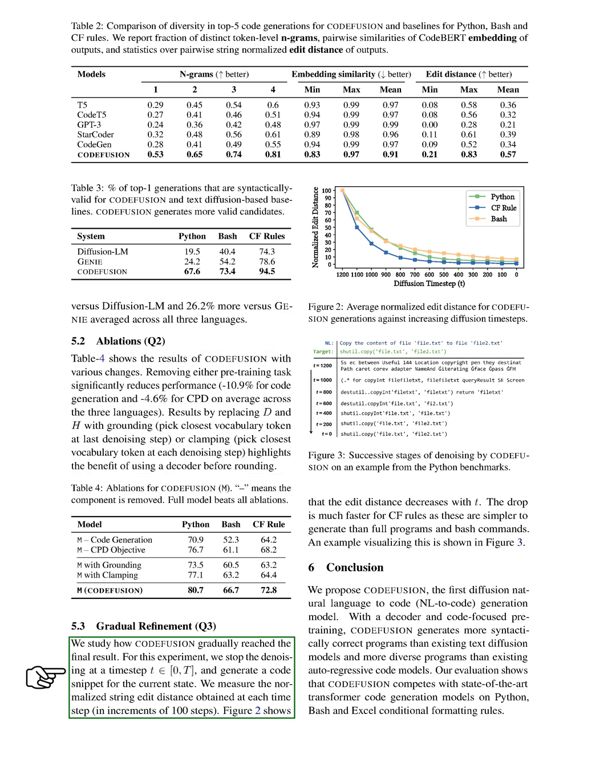5.3 Gradual Refinement (Question 3): We've studied how our system gradually reaches the final result. For this experiment, we stopped the denoising at a certain time step and generated a code snippet for the current state.